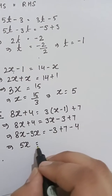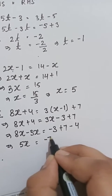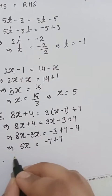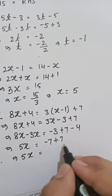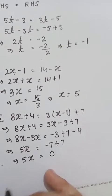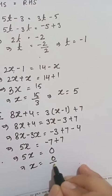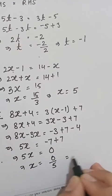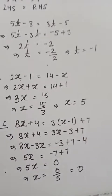Bringing x terms together: total x terms give 5x. The constants are minus 7 and plus 7, so 5x equals 0, therefore x equals 0 upon 5, which means x = 0.